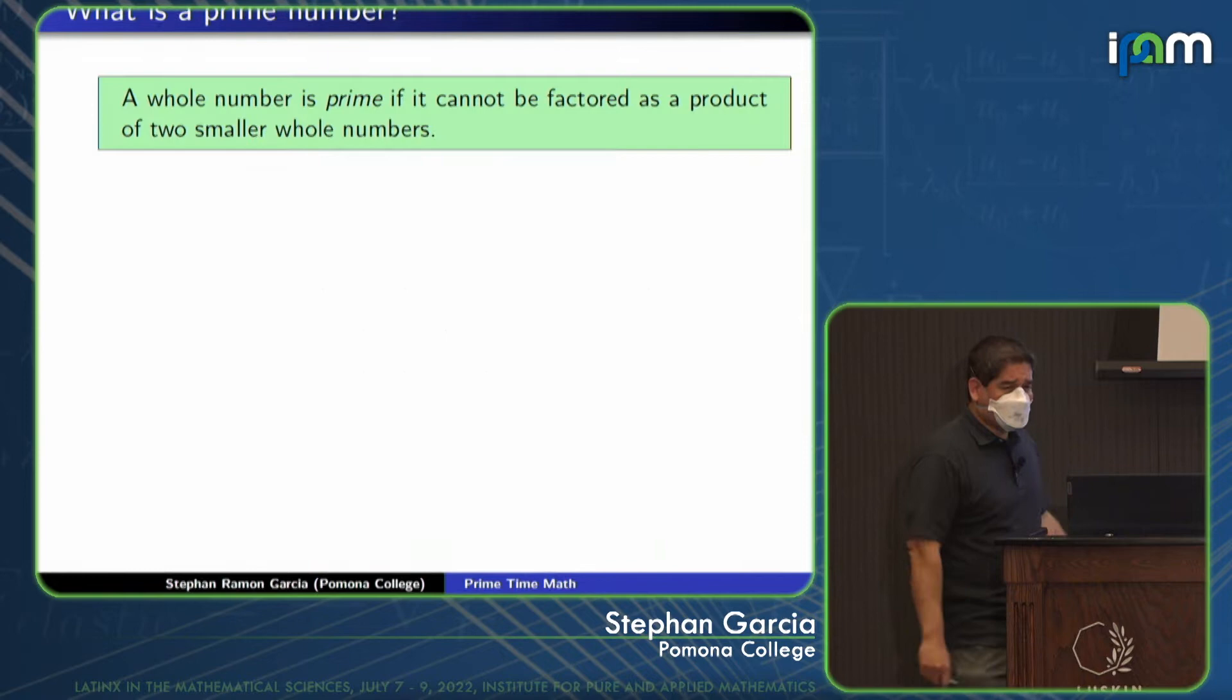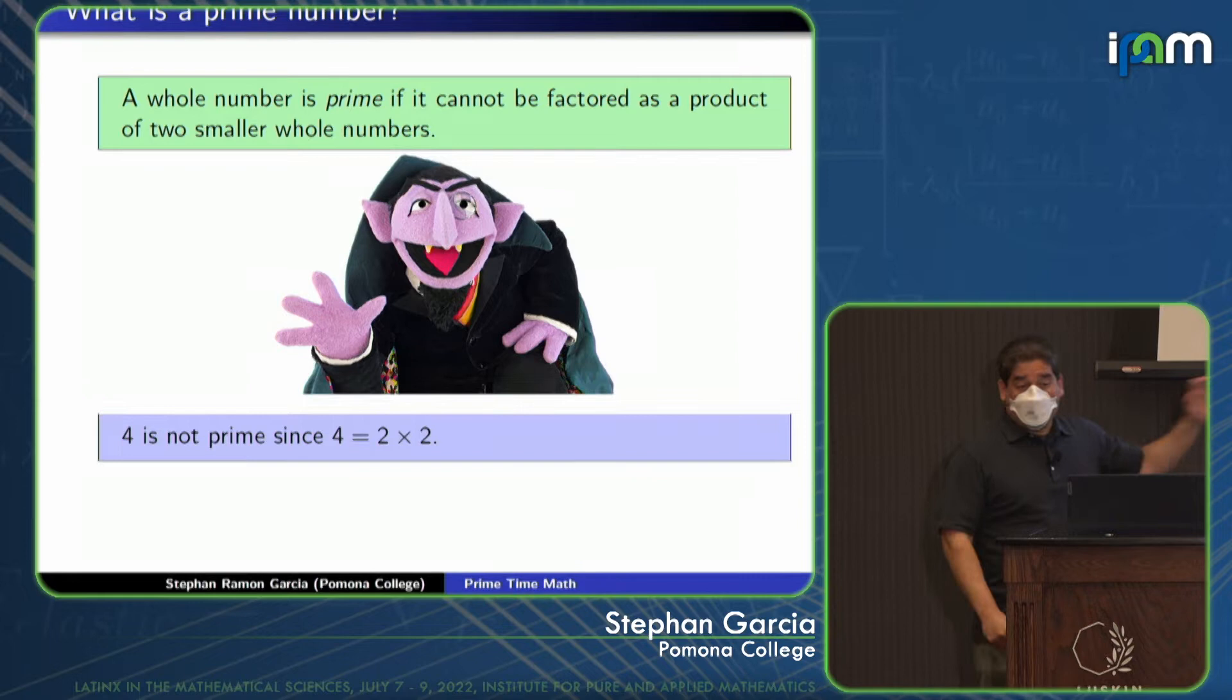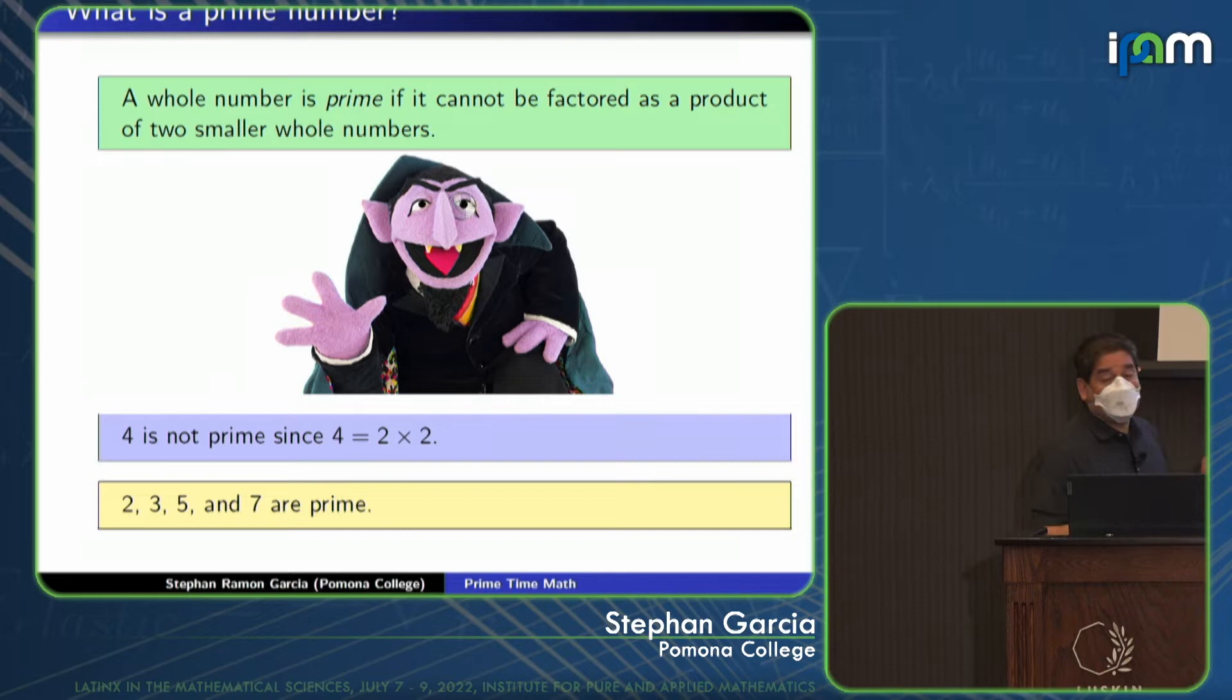Let's begin with a very basic definition. A whole number is prime if it cannot be factored as a product of two smaller whole numbers. Four is not prime because it factors as 2 times 2. On the other hand, 2, 3, and 5 are prime because try as you might, you cannot factor 2, 3, 5, and 7 as a product of smaller whole numbers.